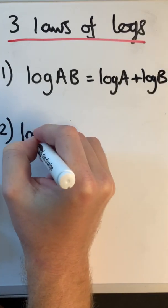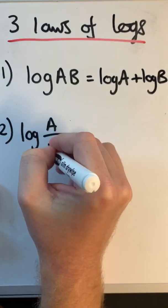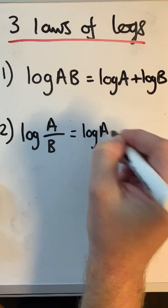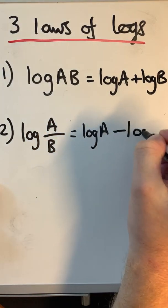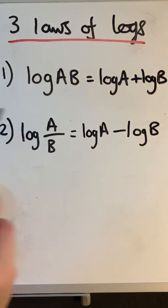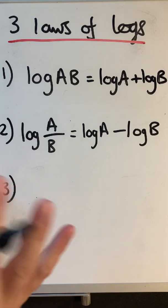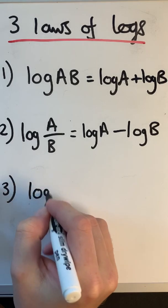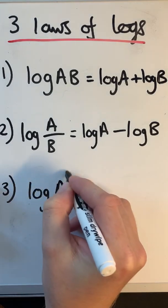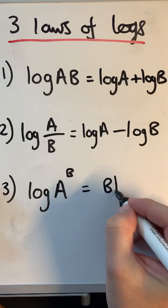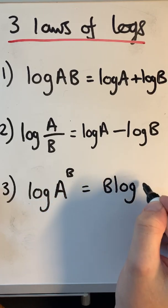The second law of logs: if we have log of a over b, we can write this as log a minus log b. The third law of logs — arguably the most important one — is: if we have log of a to the power b, then we can rewrite this as b times log a. The power is brought down in front of the log.